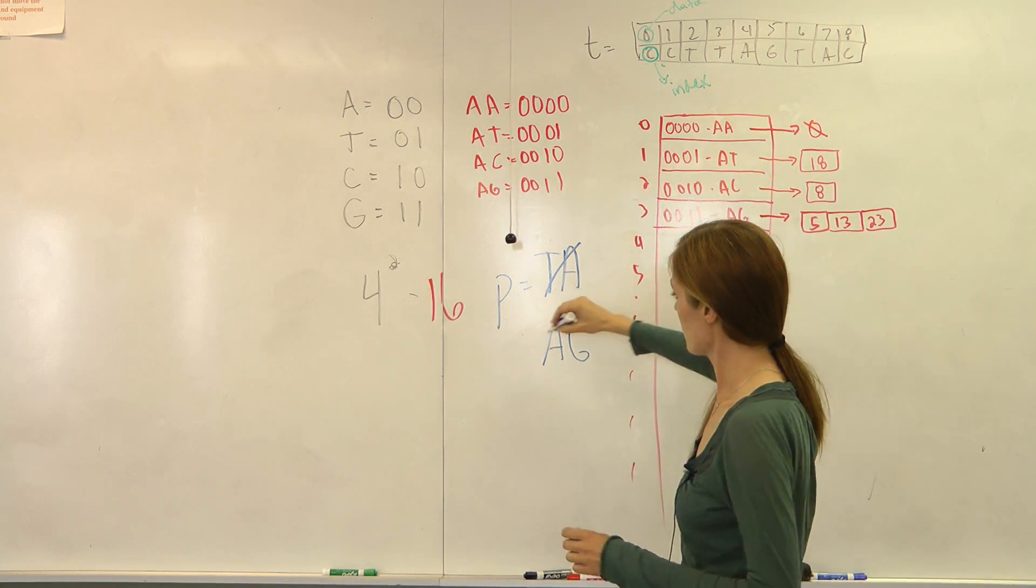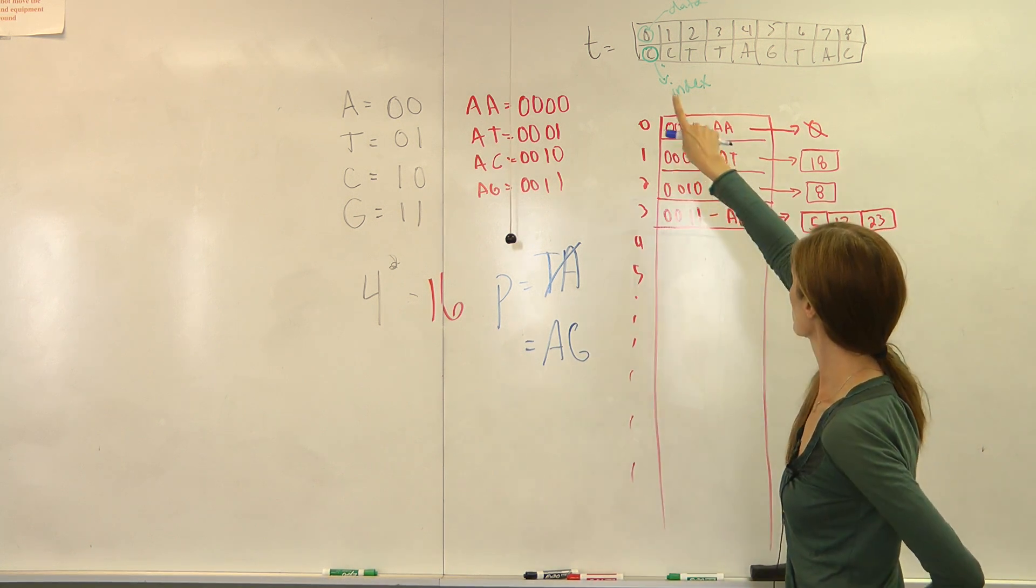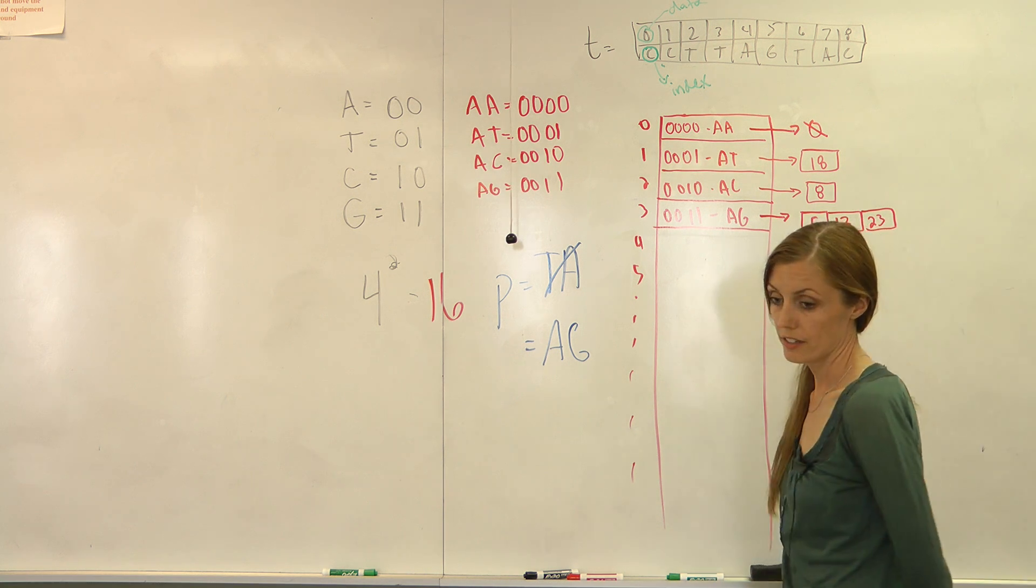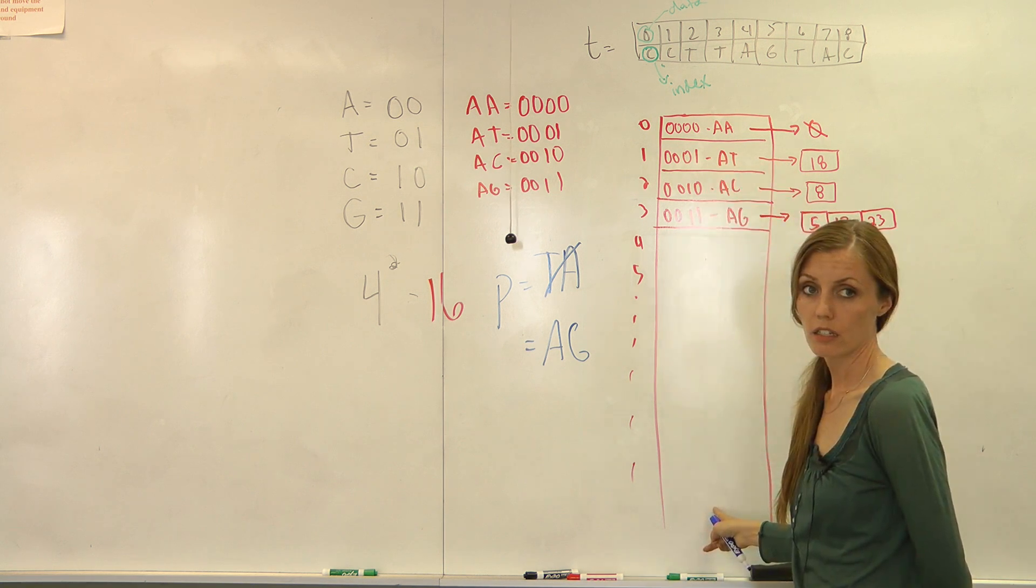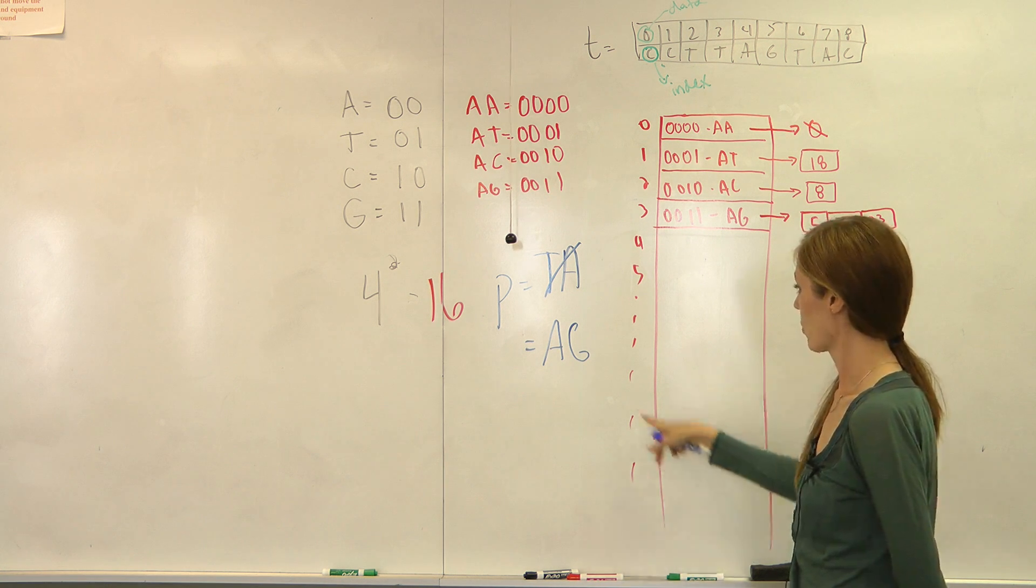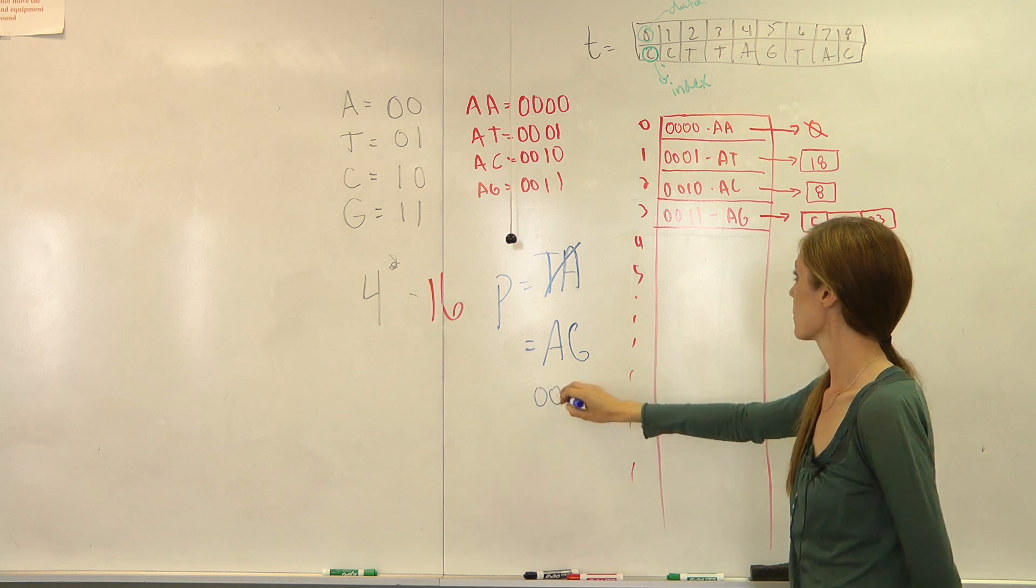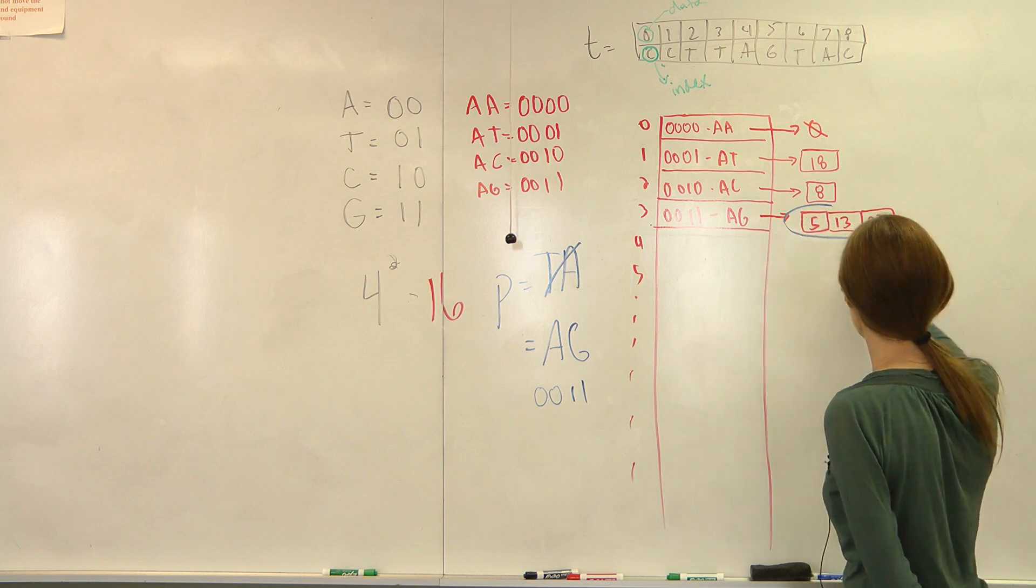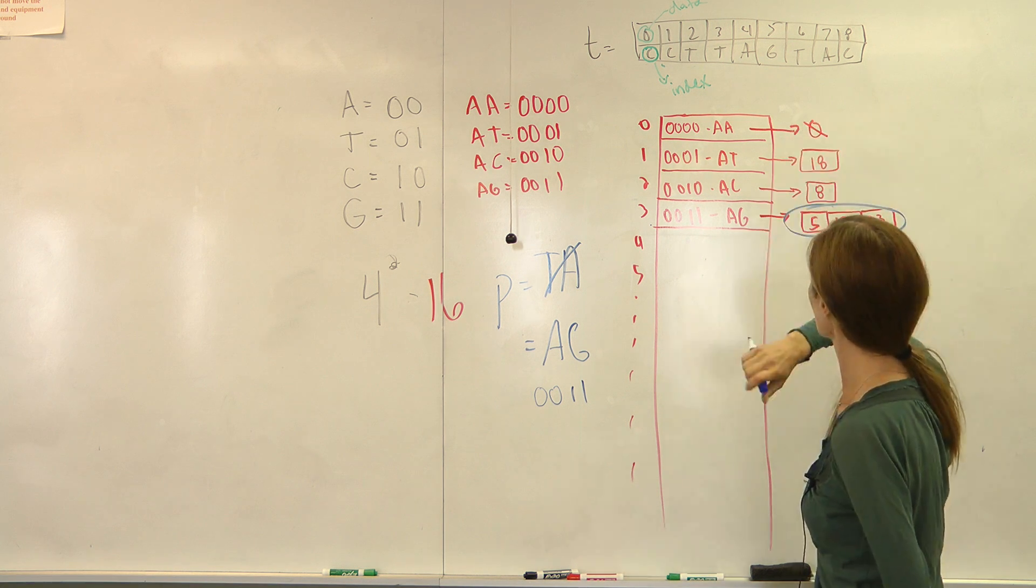Instead of having to search through all your text to find it, you just need to search through 16 at most. Or you could actually, since it is the index, you just go right to it. The index of this is 3, so you go right to 3, and here you are given the locations of the occurrence of AG.